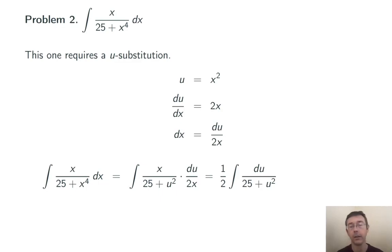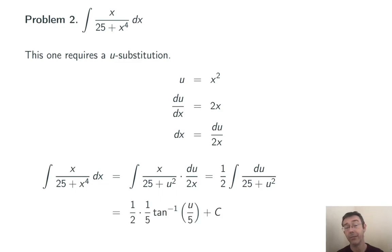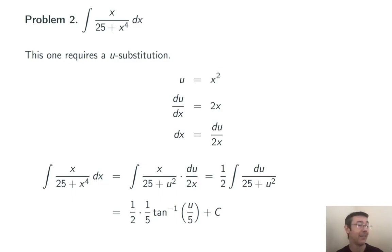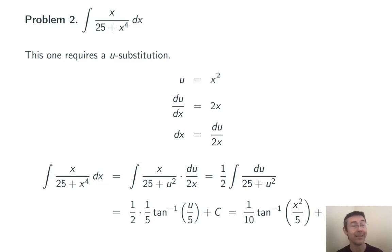This is literally the arctangent formula. So I get one half times one fifth times the arctangent of u over 5, plus C. Simplifying one half times one fifth as one tenth, and substituting x squared back in for u, I get my final answer.